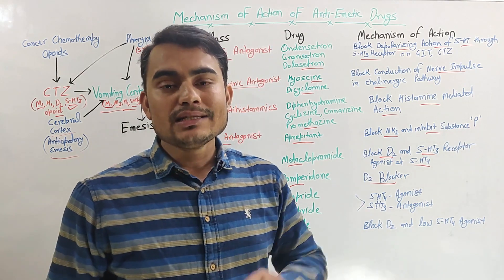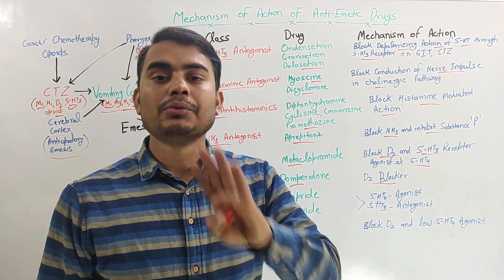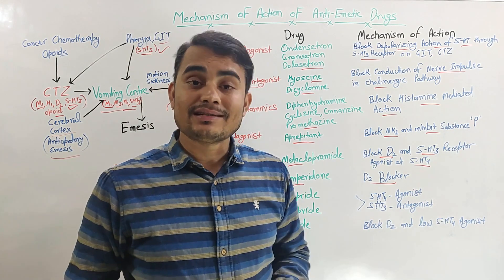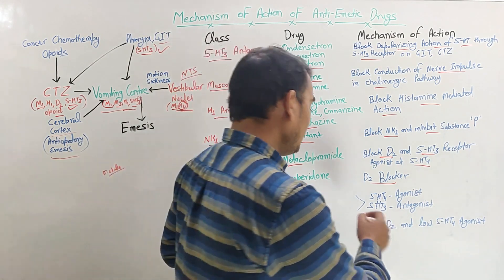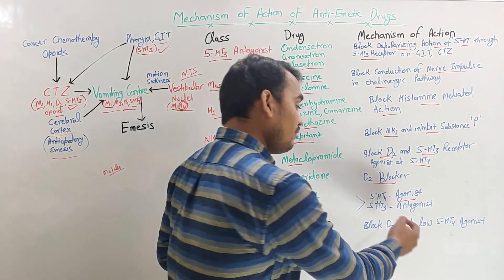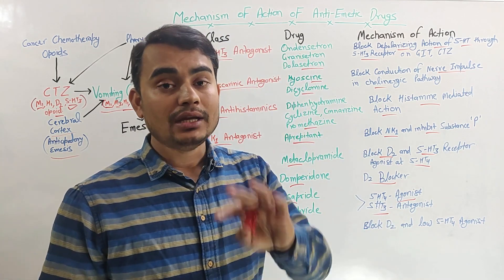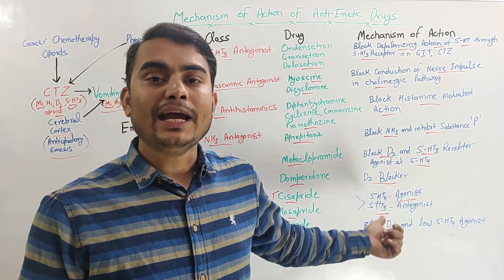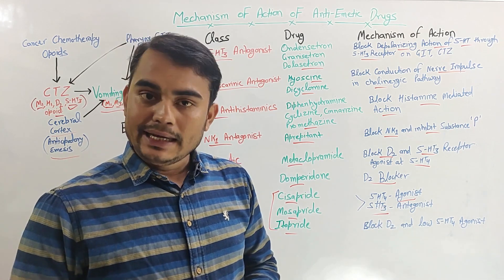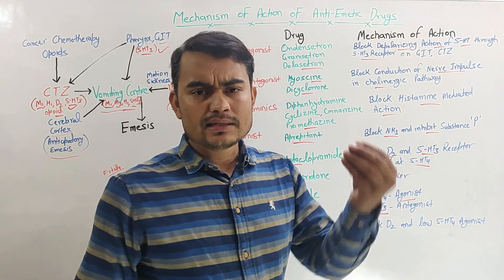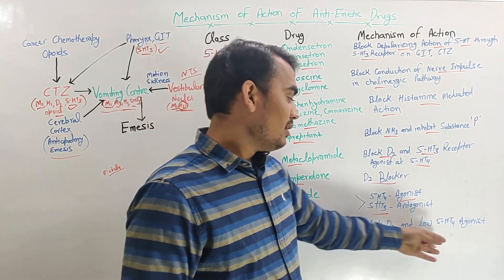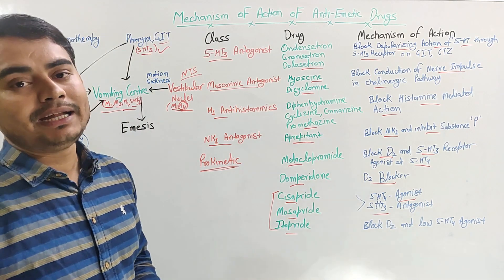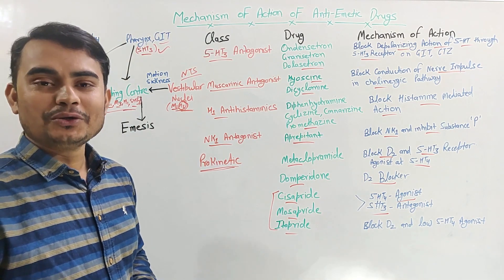Cisapride, mosapride, and etopride mainly act on the 5-HT4 receptor as agonists. Importantly, all receptors are blocked during antiemetic action, while the 5-HT4 receptor is stimulated to improve antiemetic action. Itopride also has a small action on the D2 receptor with low 5-HT4 agonistic action. This concludes the summary of emesis mechanisms and antiemetic drug classification with their mechanisms of action.